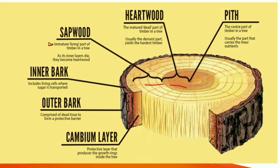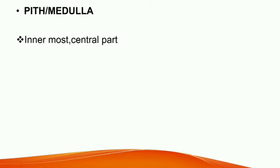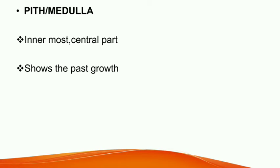First is pith, sometimes called as medulla. It is the innermost part, or the core of a tree, which varies in size and shape as per the tree. It almost entirely consists of cellular tissues which are used for the growth of trees in their young age. But as the tree grows old, it dies and decays — it neither takes any active role in the growth of the tree nor imparts any strength to it.